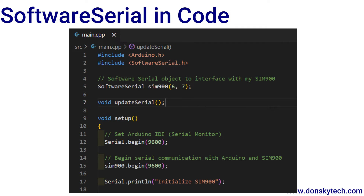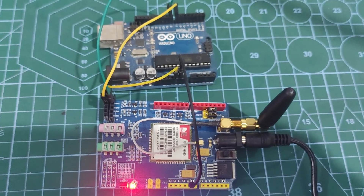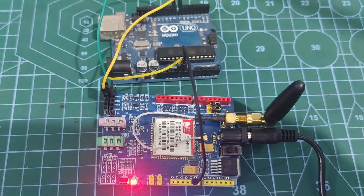I know the SIM900 is already an obsolete module, but this is just for demo purposes. Where I live, the 2G cellular network is still supported, so I'm still using it. After initializing the software serial, all you have to do is initialize the baud rate. I have set the baud rate for my GSM SIM900 to 9,600, and now you can start communicating with your GSM SIM through serial communication using the software serial object. This is my current setup using software serial on my Arduino Uno to communicate with my GSM SIM900.